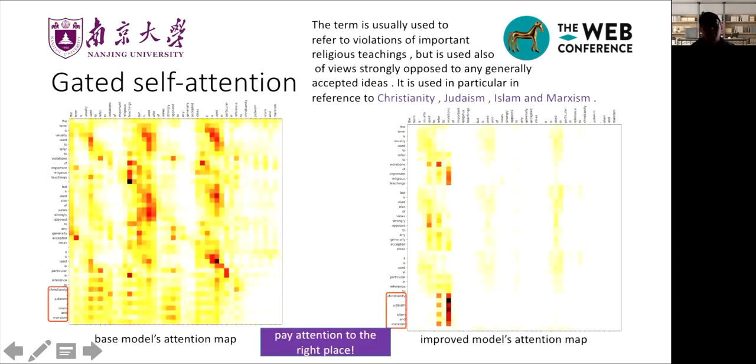Besides, we also visualize the gated self-attention to show the effect of deep linguistic representation. The right feature is from improved model. As we can see, the attention scores are higher in the right place.